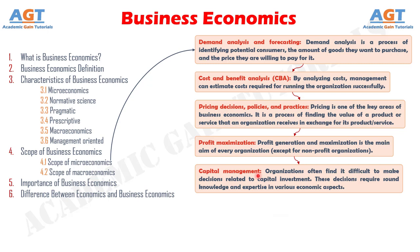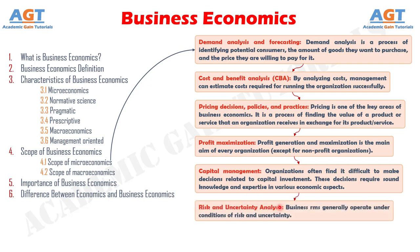Risk and uncertainty analysis: business risk management systems generally operate under conditions of risk and uncertainty. Analysis of risks and uncertainties helps the business firm in arriving at efficient decisions and in formulating plans on the basis of past data, current information, and future predictions. After knowing the scopes of microeconomics, let's focus on the scope of macroeconomics.